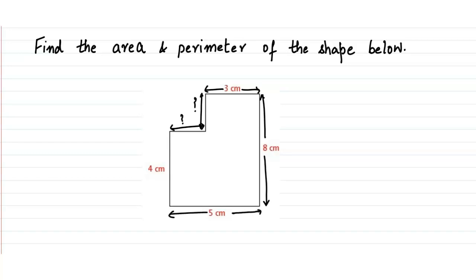So how do we figure out the missing sides? One possible way is to divide the shape into rectangles. One way of doing that is by drawing a line over here.